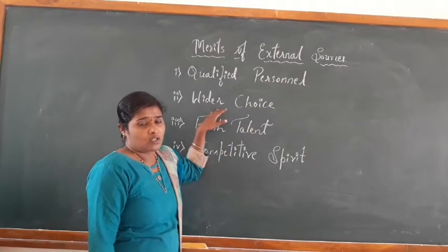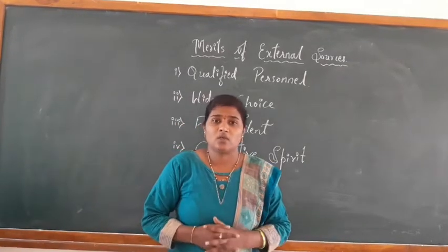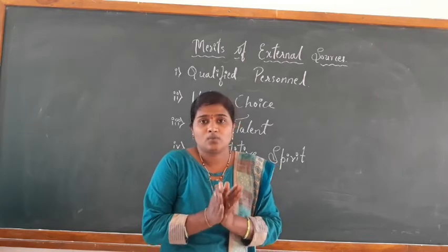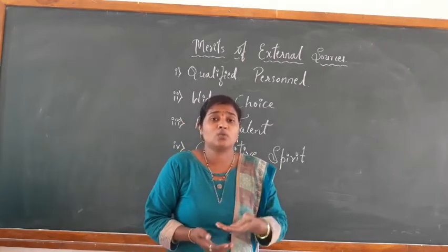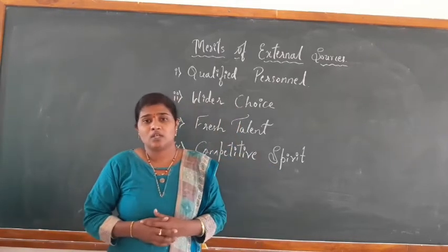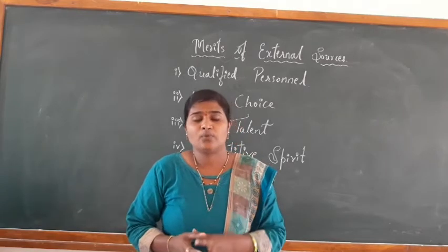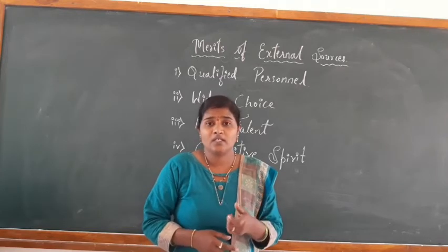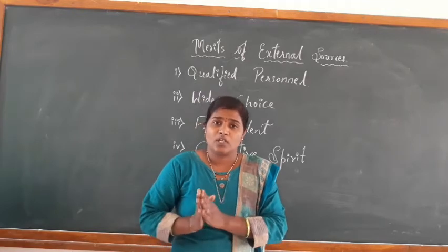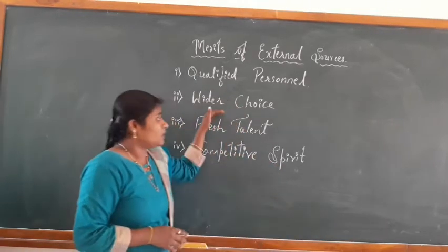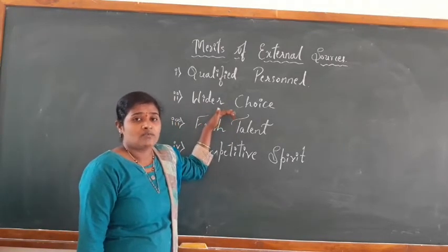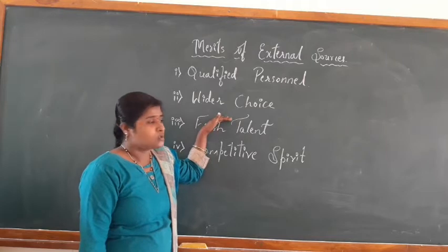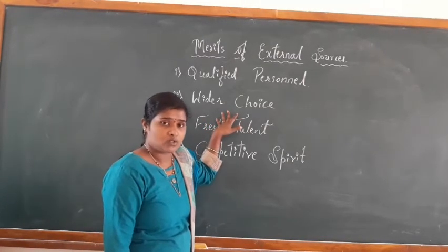Next is wider choice. Wider choice means you can get more options in your organization to make the selection of new employees, and this is only possible with external sources. When you are going to make recruitment for your organization, you will get a number of candidates to make the selection from. For the right job, you can select the right person. You can make the selection of your own choice — whoever is suitable for your organization — which is more helpful. This is called selection of the right person for the right job, and it is one of the benefits of external sources.